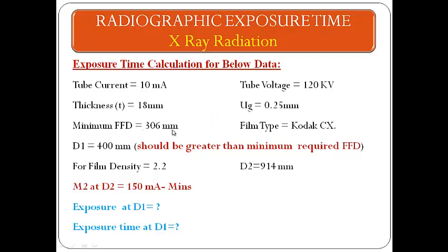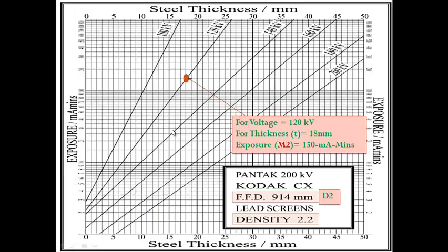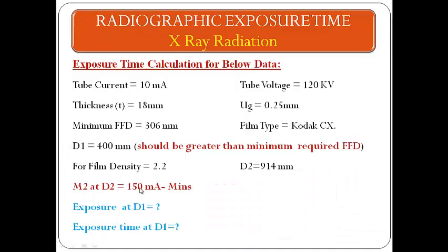The minimum FFD is 306 mm. This chart is for Kodak CX film, so the film type we are using is Kodak CX.